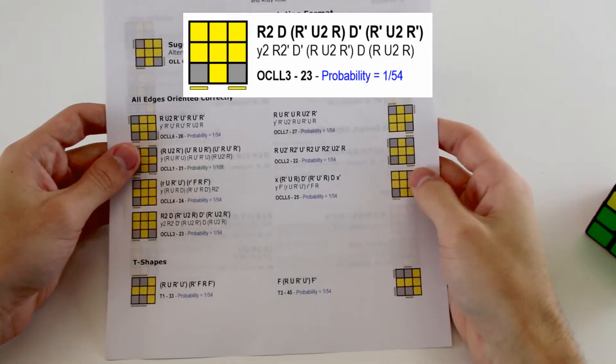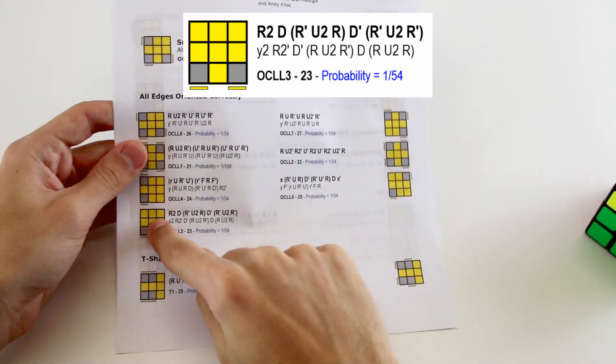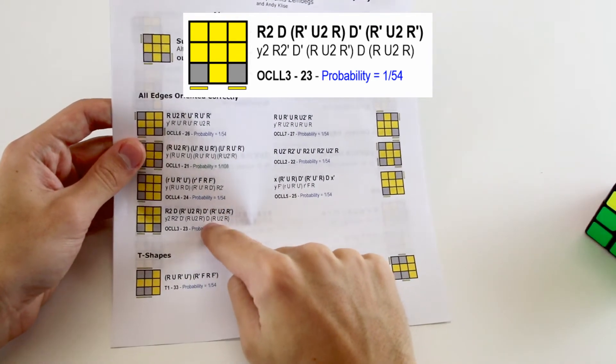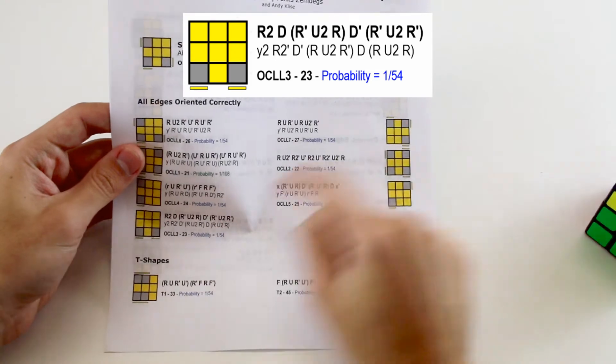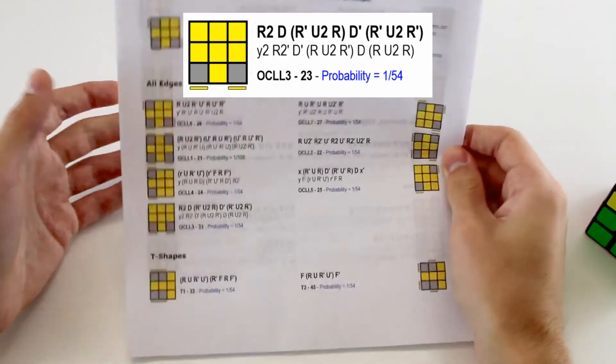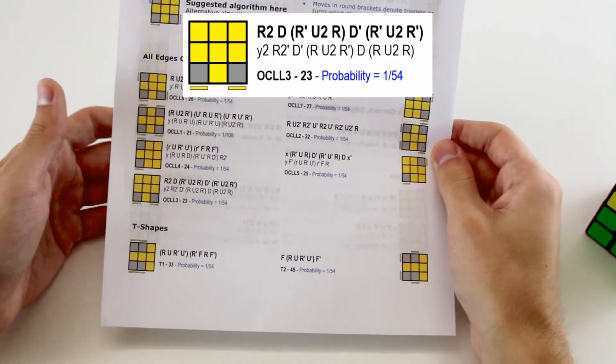So this document shows you every single OLL case with the image of the cube, a suggested algorithm, an alternative algorithm, and the probability of that case coming up. And the order in which the algorithms appear is the order that we suggest learning them.